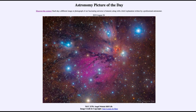So here we have a very nice star forming region which can come across as a painting, although as noted in the description, the canvas for this painting at the estimated distance for this cloud would be 60 light years across — quite an immense painting, and an astronomical one in more than one way. That was our picture of the day for August the 26th of 2019, titled NGC 2170 Angel Nebula Still Life.